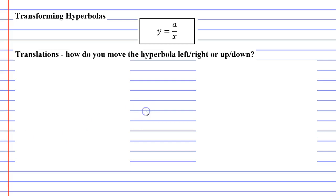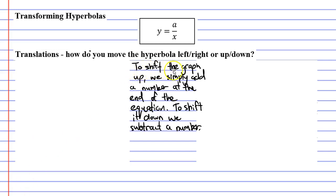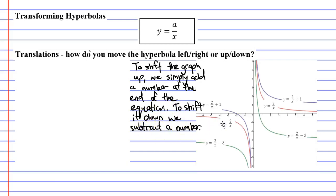To shift the graph up, we simply add a number at the end of the equation; to shift it down, we simply subtract a number. The image here shows adding 1 to shift it up 1, and subtracting 3 to shift our graph down 3.